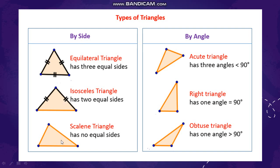The third type is the scalene triangle. A scalene triangle will have no sides equal — all the sides will be of different lengths. So based on sides, there are three types of triangles: equilateral triangle, isosceles triangle, and scalene triangle.